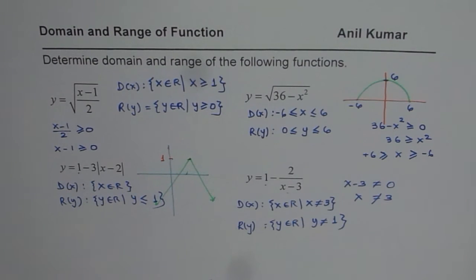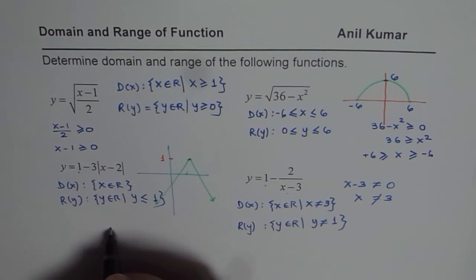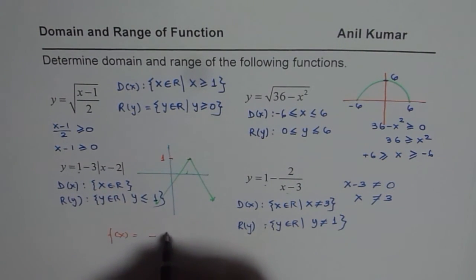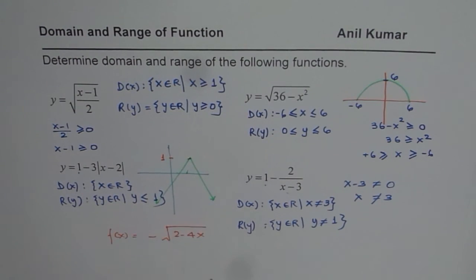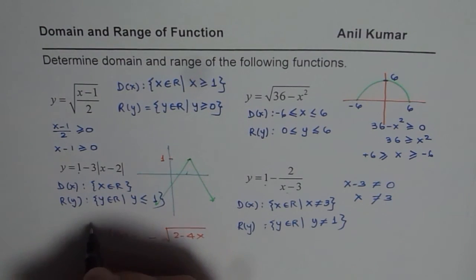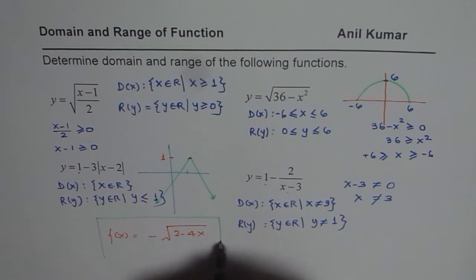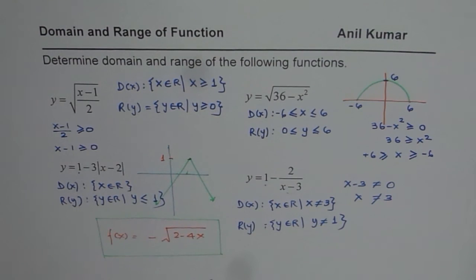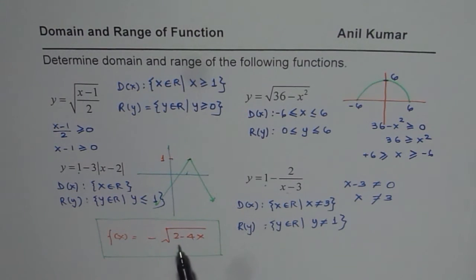Now, combining these types of functions can give us a more complicated function. Here is a test question for practice: find the domain and range of f(x) = 2 minus square root of (2 minus 4x). You can look at some of my other videos to check your answer. Try to sketch this function and verify whether you have the right answer. Thank you and all the best.